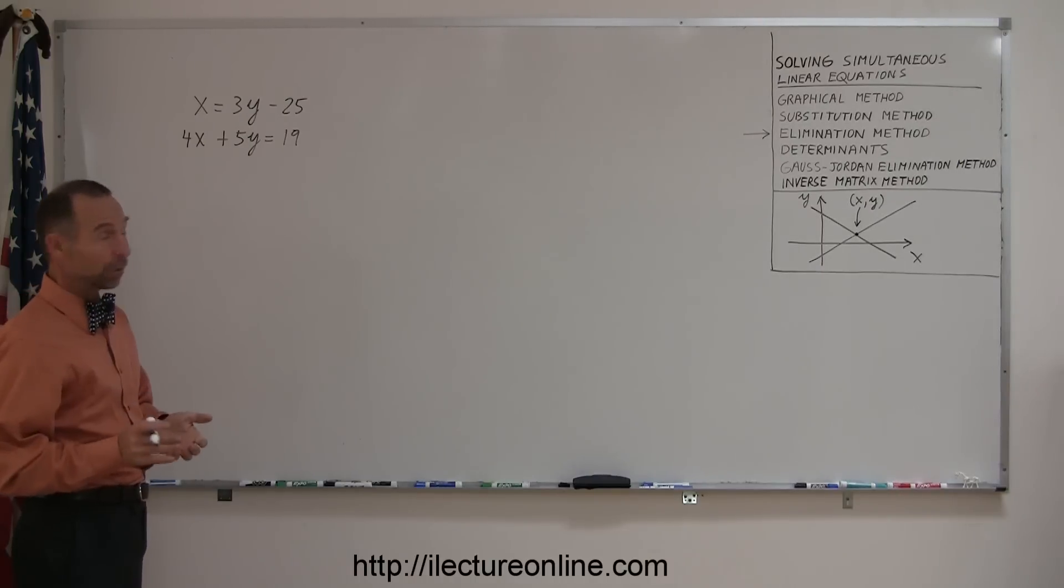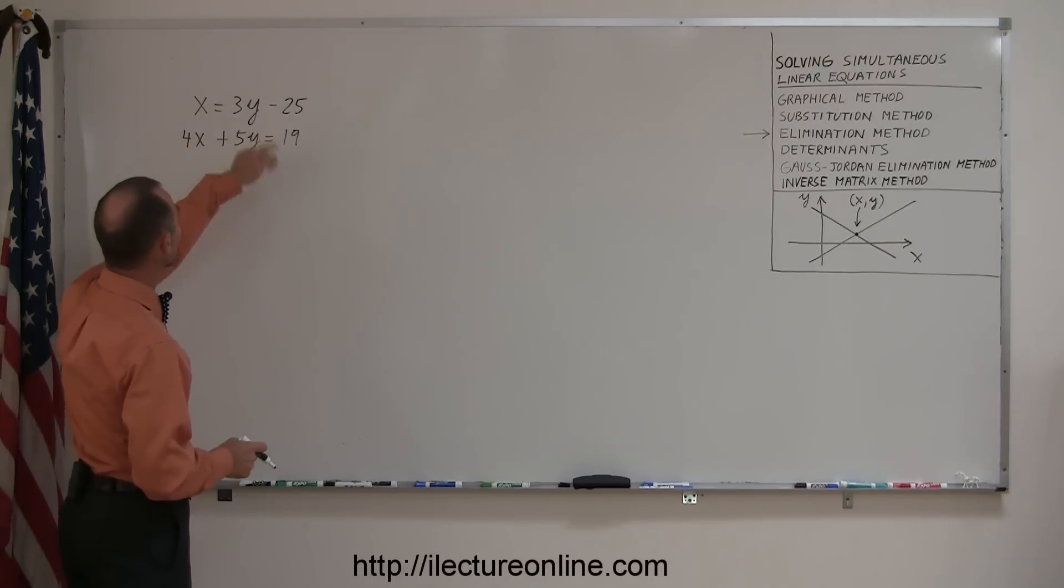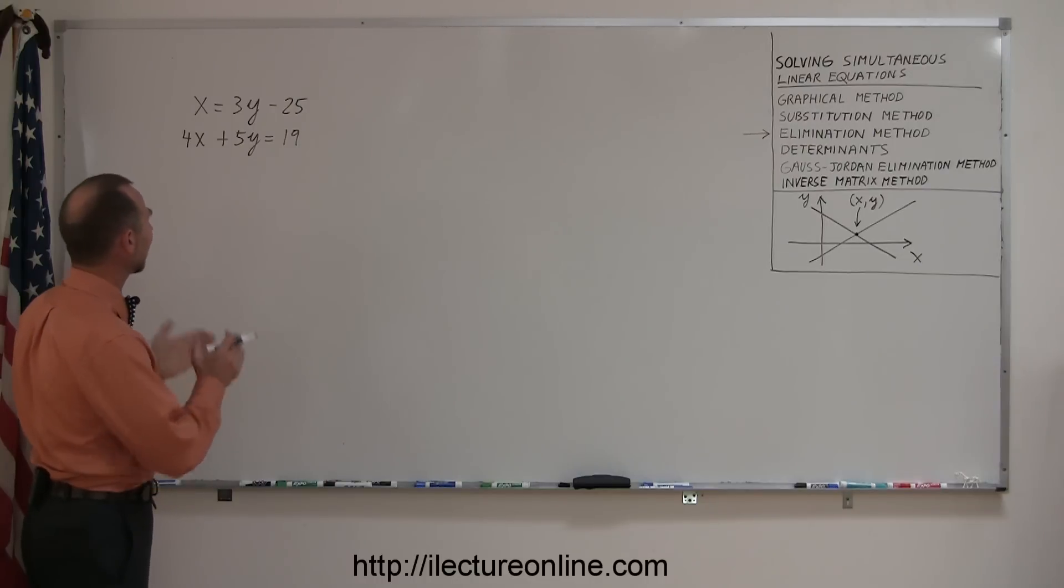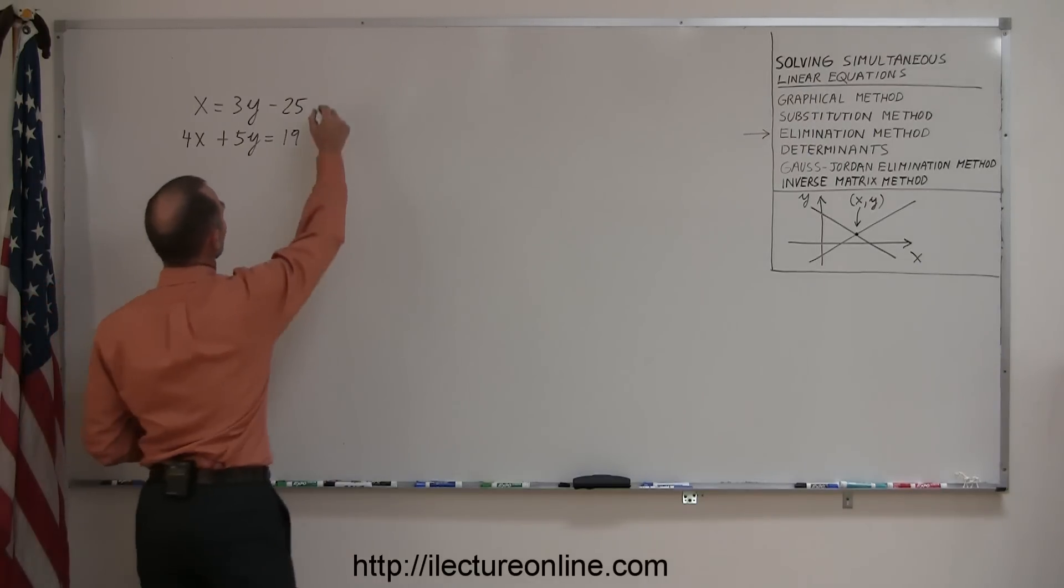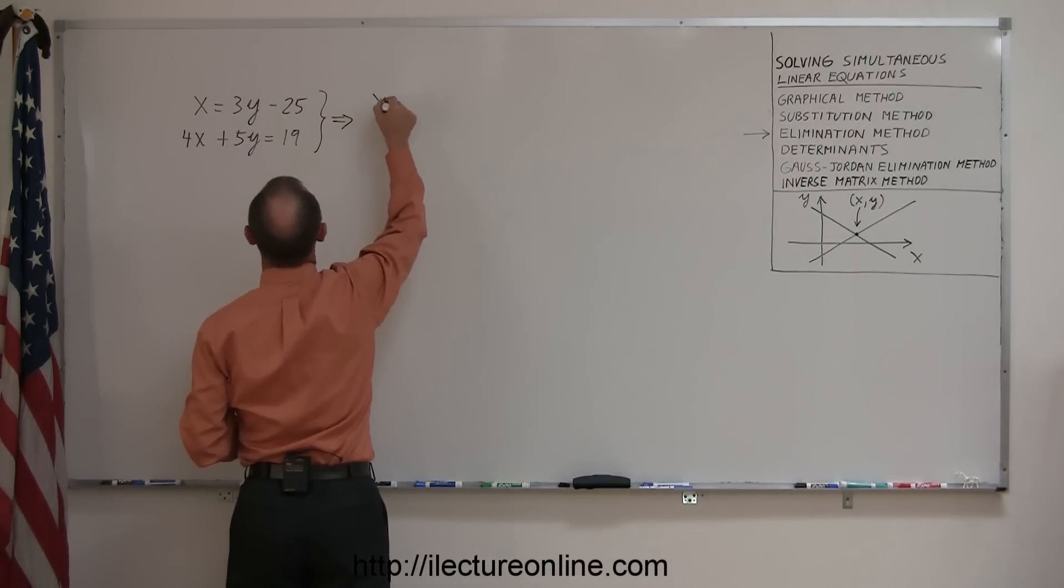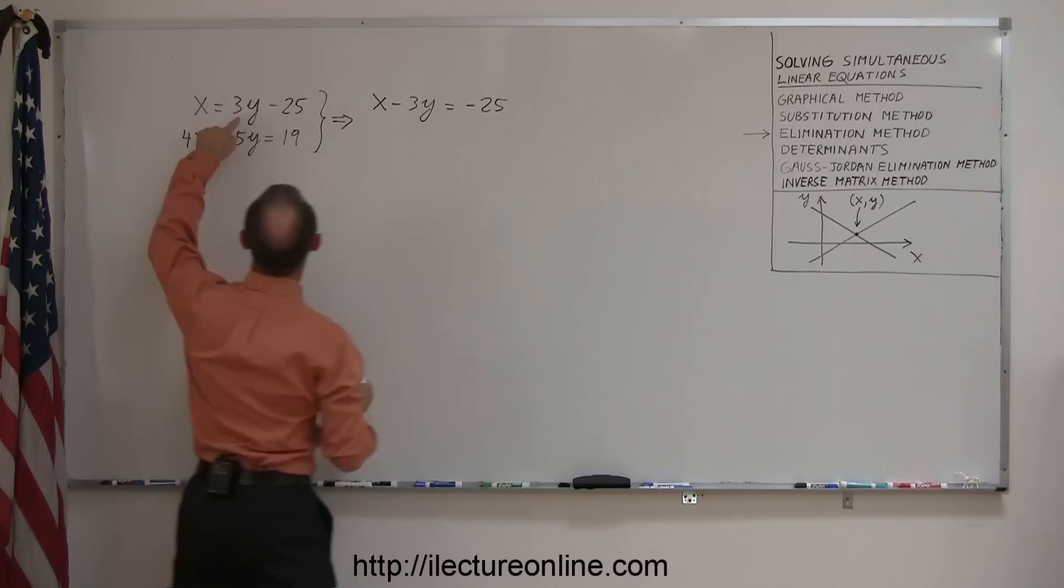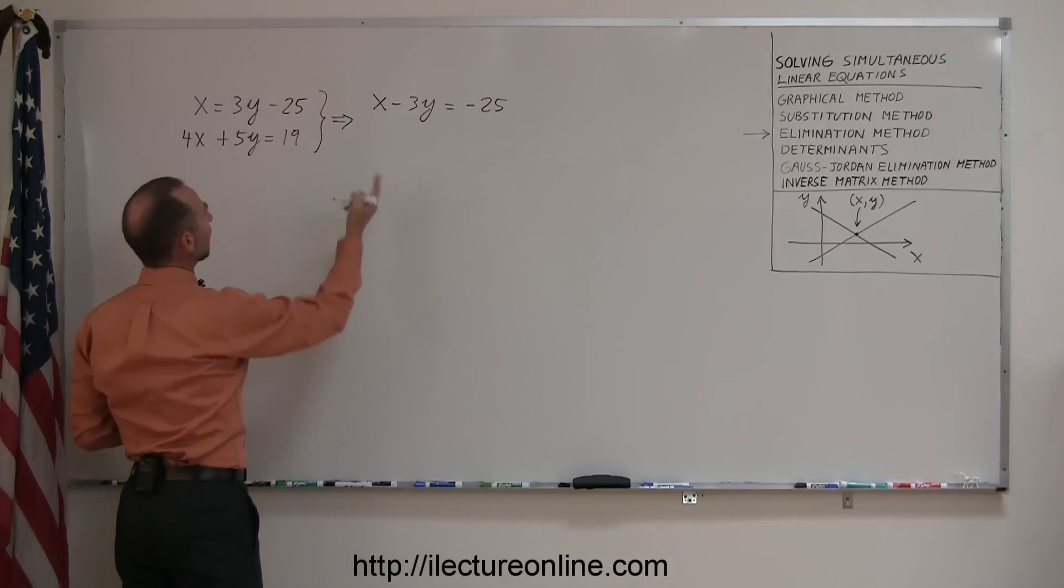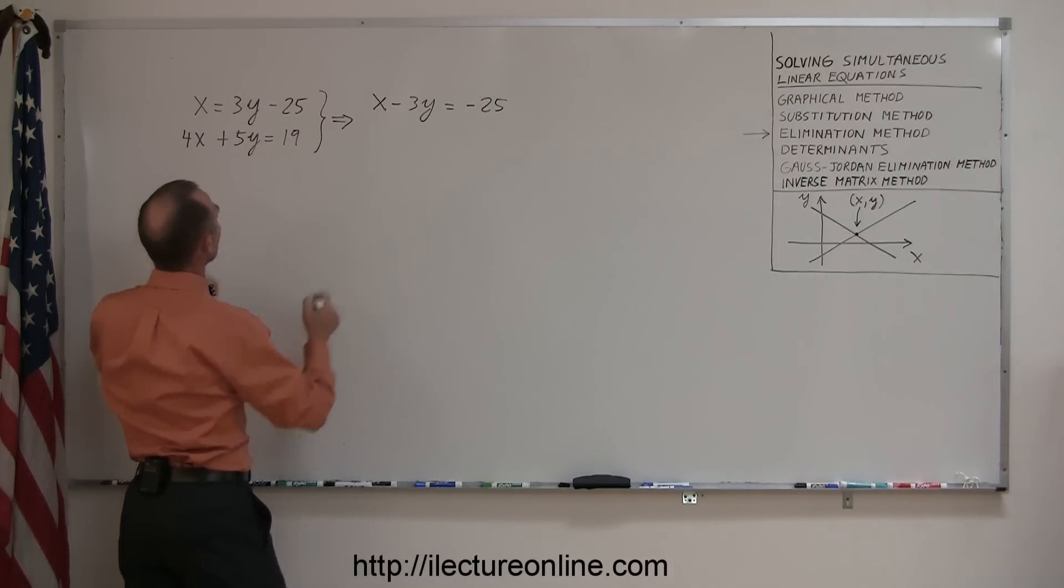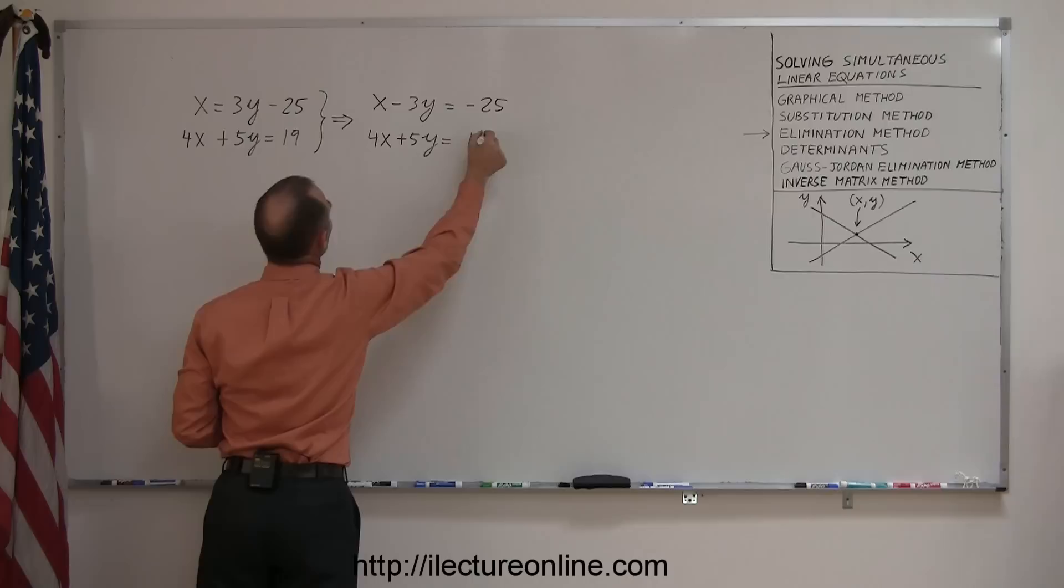The first obstacle we're running into here is that they're not in the same format. Here we have the 3y on the right side equation, here we have the 5y on the left side equation. So first let's move things around so that the x and the y and the numbers all appear on the same side. We'll take these two equations and rewrite them in this way: x minus 3y equals minus 25, so all I did here is move the 3y to the other side and that became minus 3y. Here I simply keep everything the same so I have 4x plus 5y equals 19.